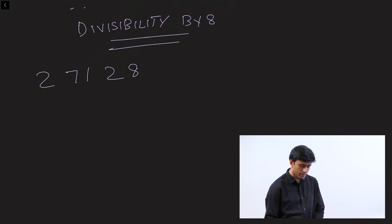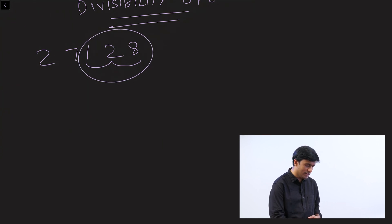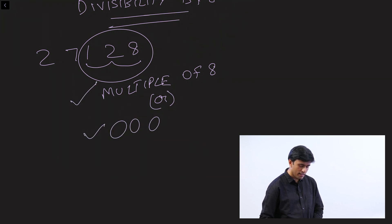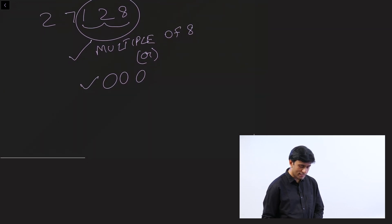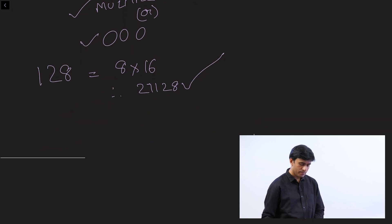Let's do the next divisibility test — let's see if a number is divisible by 8. Take 27,128. Is this number divisible by 8? To see if a number is divisible by 8, you need to check the last three digits. If the last three digits is a multiple of 8, or if the last three digits are zero zero zero, then we can say that the number is divisible by 8. The last three digits here are 128. Since 128 is 8 into 16, it is a multiple of 8. Therefore 27,128 passes the test and is divisible by 8.